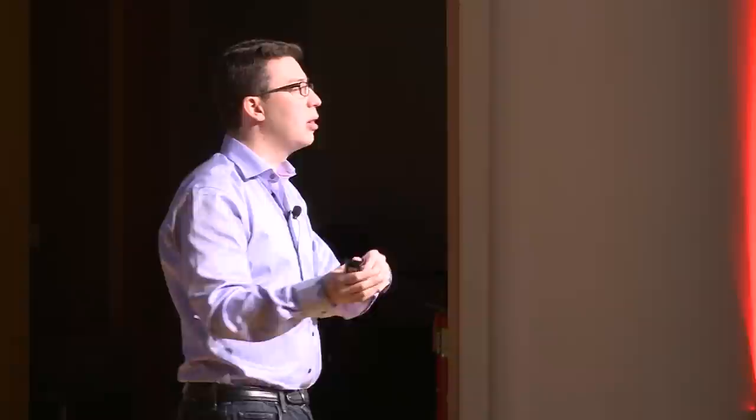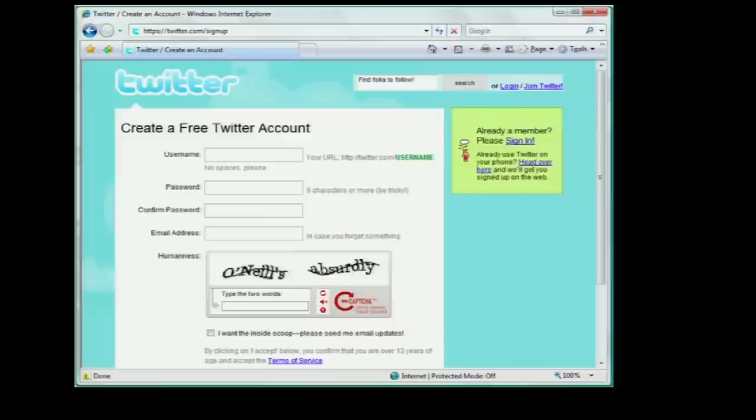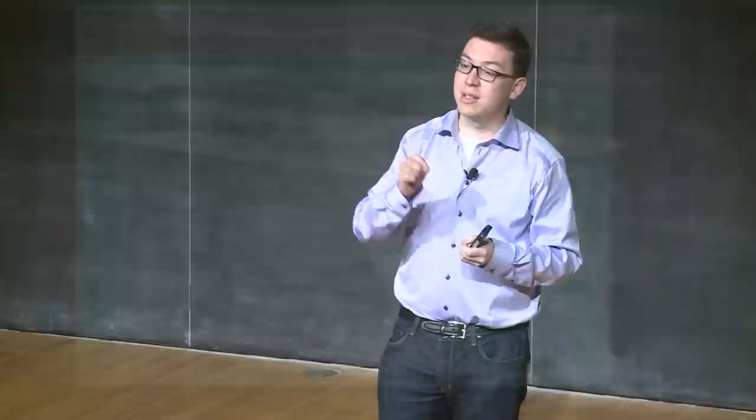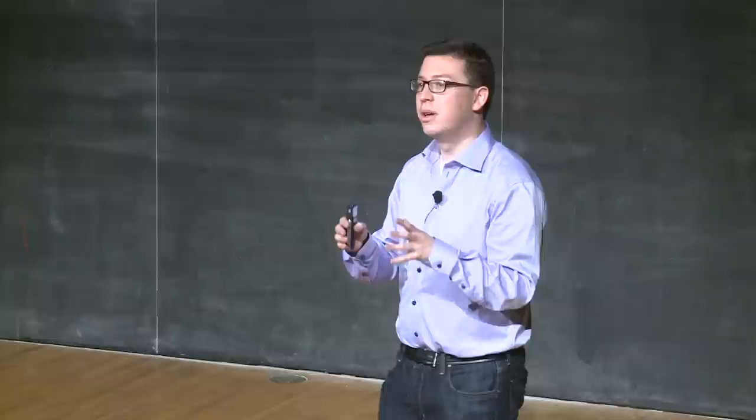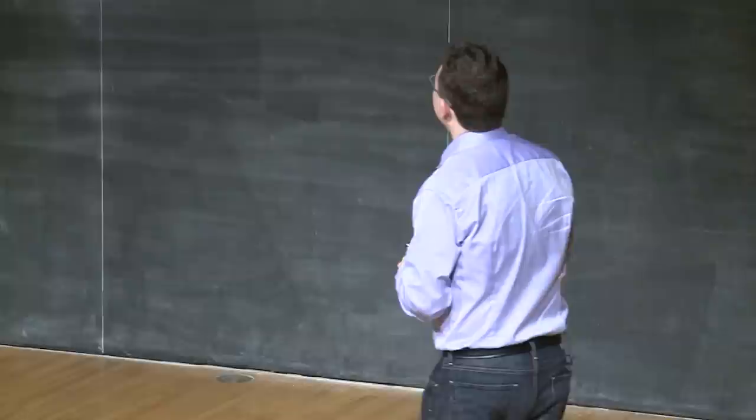And basically, since we released it about three or four years ago, a lot of websites have started switching from the old CAPTCHA, where people wasted the time, to the new CAPTCHA, where people are helping to digitize books. So for example, Ticketmaster, so every time you buy tickets on Ticketmaster, you help to digitize a book. Facebook, every time you add a friend or poke somebody, you help to digitize a book. Twitter, and about 350,000 other sites are all using reCAPTCHA. And in fact, the number of sites that are using reCAPTCHA is so high that the number of words that we're digitizing per day is really, really large. It's about 100 million a day, which is the equivalent of about 2.5 million books a year. And this is all being done one word at a time by just people typing CAPTCHAs on the internet.